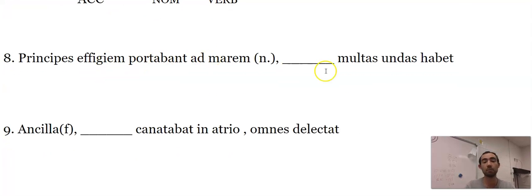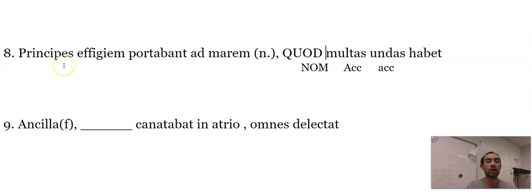Principes effigiem portabant ad mare. Blank. Multas undas habet. Same deal. I'm just going to follow along. Multas and undas go together as our direct object. This has to be nominative. It has to be our subject. And that means that this is quod, which has many waves.